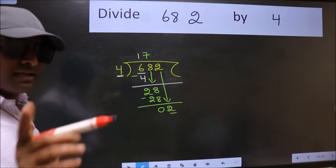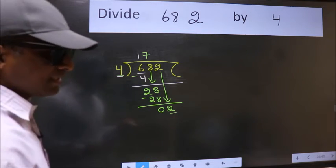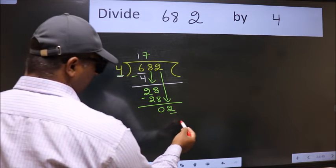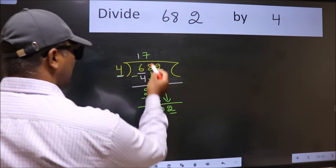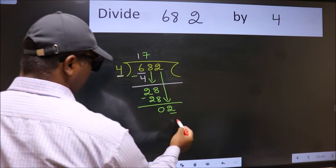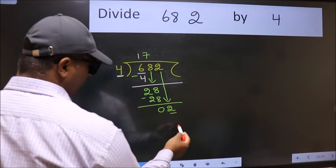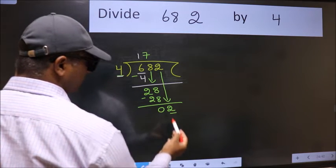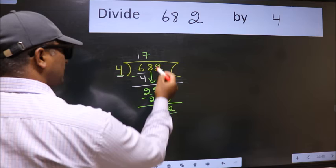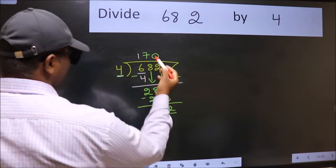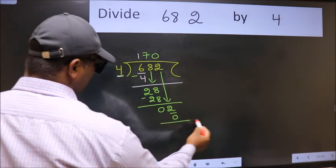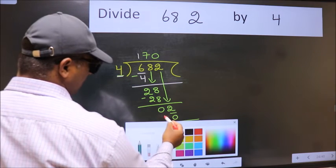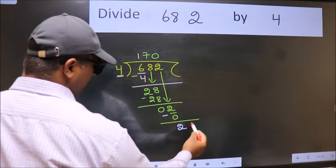Instead of that, what we should think of doing is which number should we take here. If I take 1, we will get 4. But 4 is larger than 2. So what we do is we take 0 here. So 4 into 0 is 0. Now we subtract. We get 2.